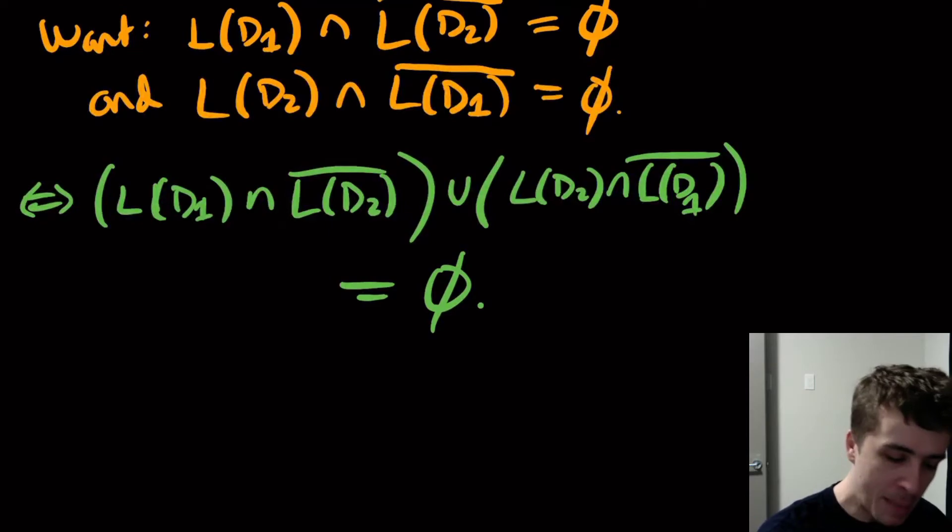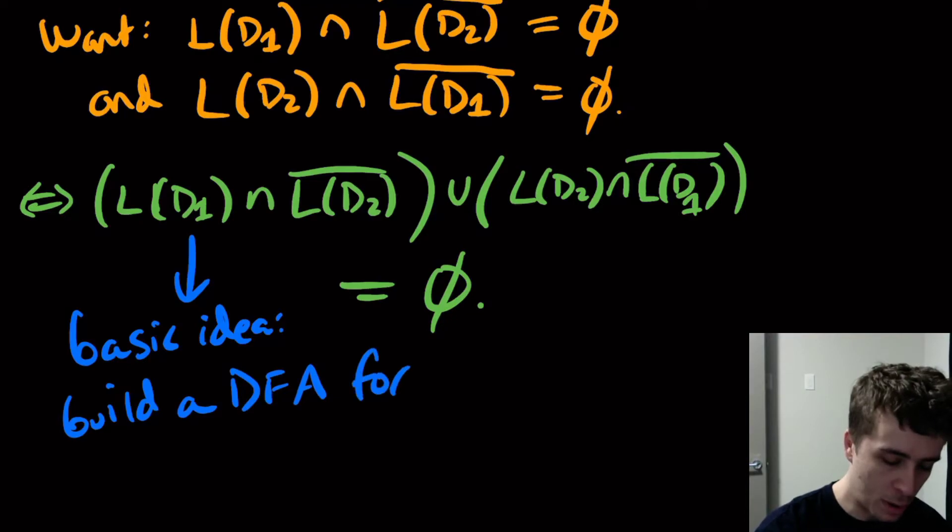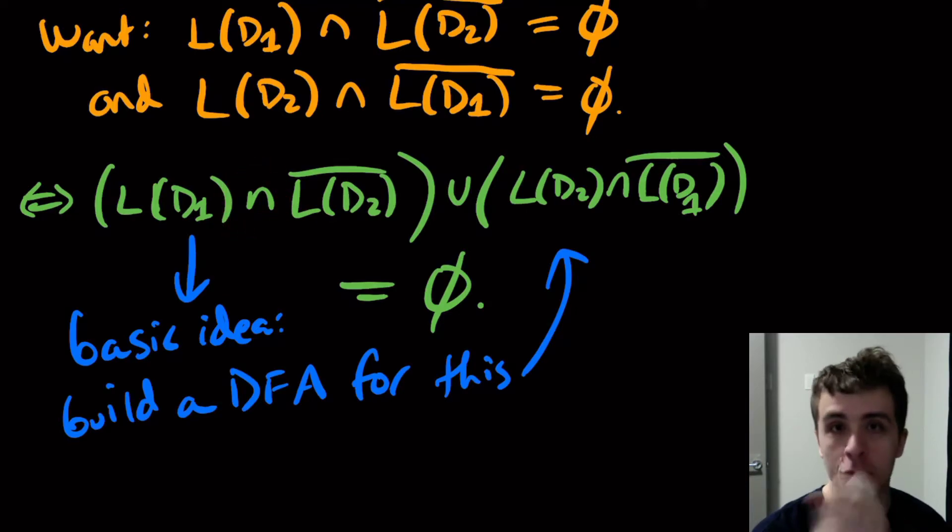So the basic idea then: build a DFA for this. If we can build a DFA for all of this stuff, because it just involves doing intersections, which is why we introduced the product construction, the complement operation which is easily done with DFAs, and union, which is again product construction. We can build a giant DFA for this whole thing.